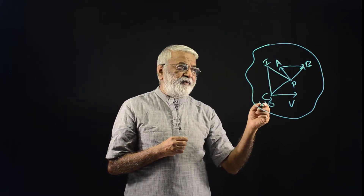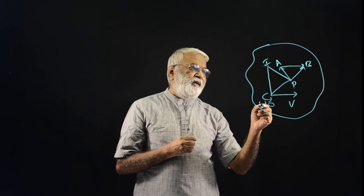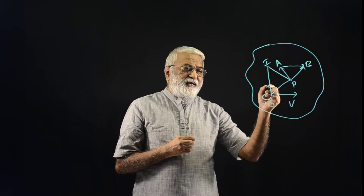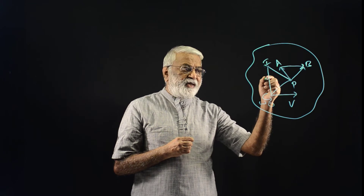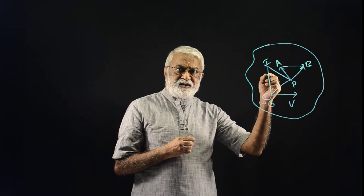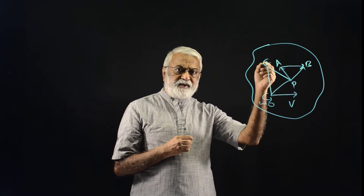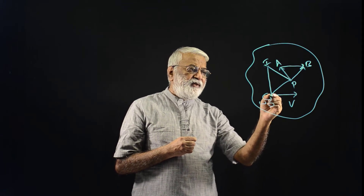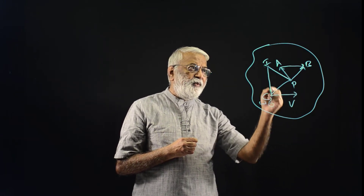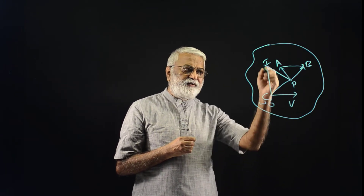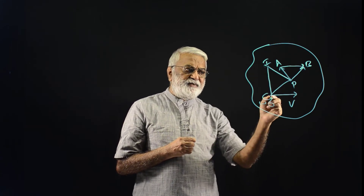If we want to express the velocity of any point in this body as Omega times the distance of that point from the instantaneous axis, then even for O we should be able to do that. That is, V must be equal to Omega times IO. So V must be equal to Omega times IO.